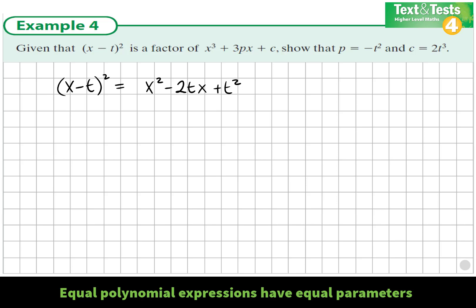That equals the cubic that's given. Now the cubic is unusual in that there's no x² term. I'll write it out with a 0x² term because it'll be easier to divide into it then. So we have x³, 0x², +3px + c.